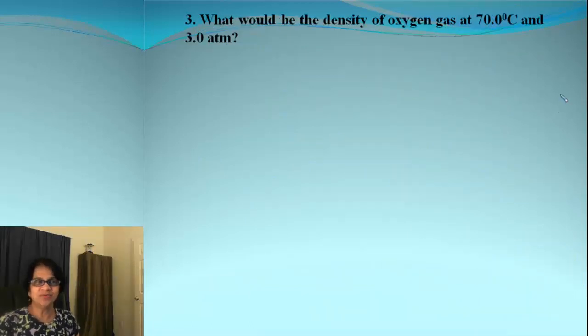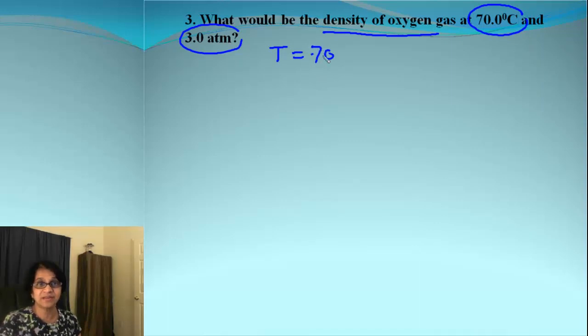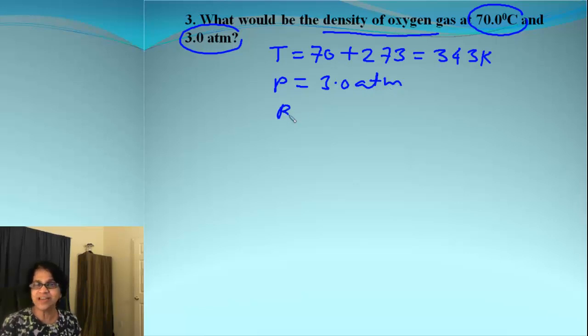Let's look at this problem now. We need to find out the density of oxygen gas. And these are the only two values given. Temperature is 70 Celsius. Make sure you convert that to Kelvin. And that is simply 343 Kelvin. And then we have pressure at 3.0 atmosphere. Keep in mind, that will tell you which R value to select. Since this is atmosphere, R value must be also in atmosphere, which is 0.0821.